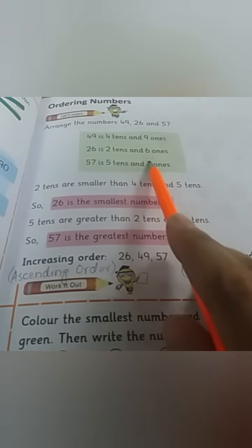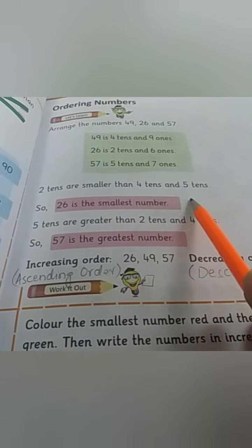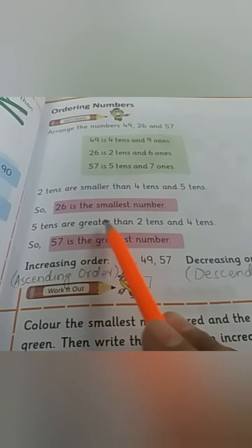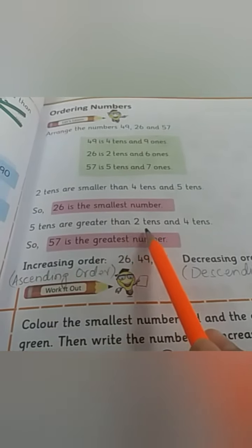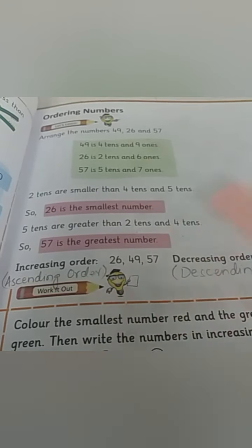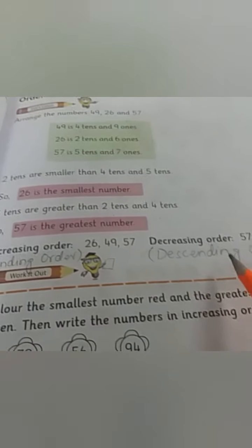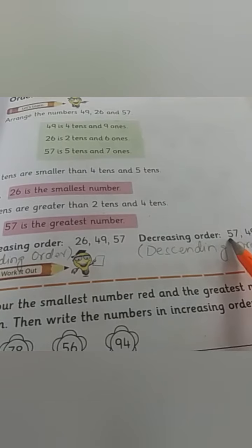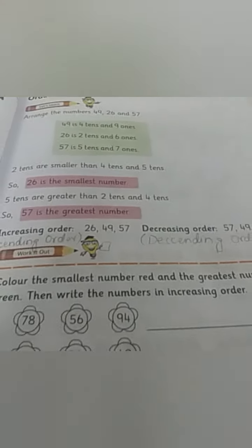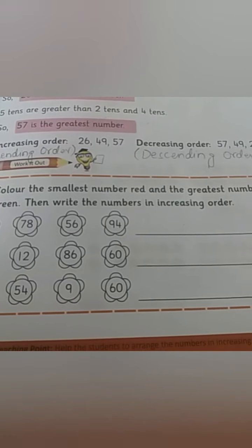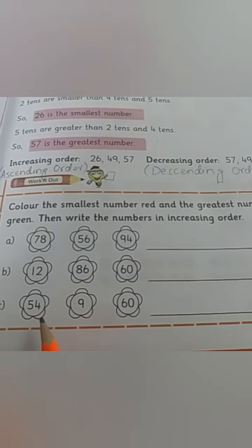Now come back to your books. Let's see over here: 49 has four tens and nine ones, 26 is two tens and six ones, 57 is five tens and seven ones. Two tens are smaller than four tens and five tens, so 26 is the smallest number. Similarly, five tens are greater than two tens and four tens, so 57 is the greatest number. Increasing order ko hum ascending order bhi bolte hain.